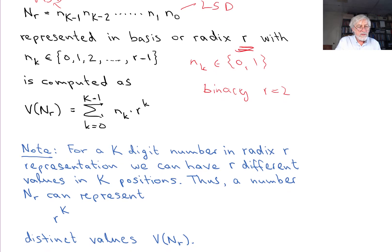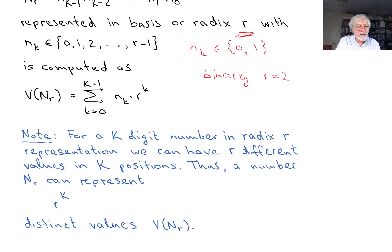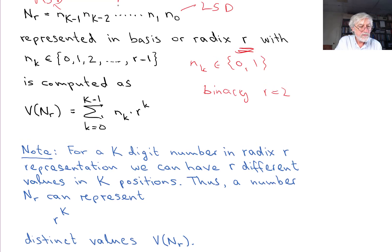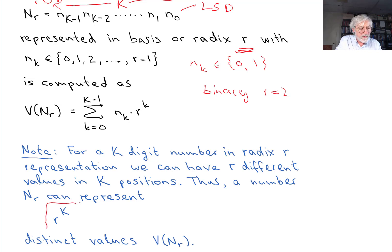For a capital K digit number in radix r representation, there are r different possible values in each of the K positions — each position can be 0, 1, 2, ..., r-1. So altogether there are r to the capital K possible distinct values that the number can take on.